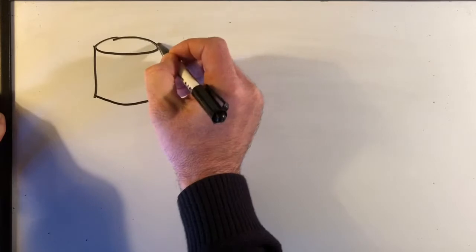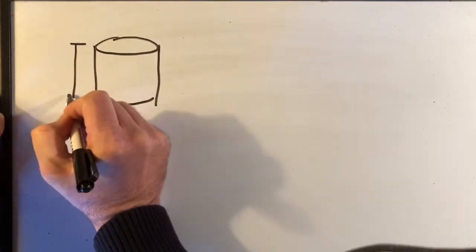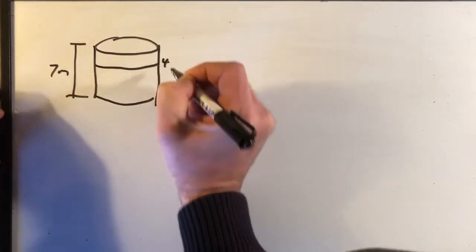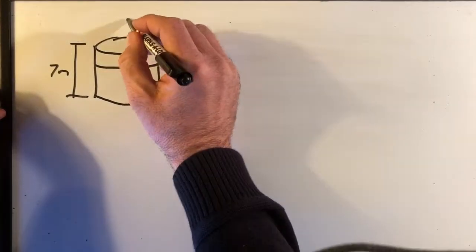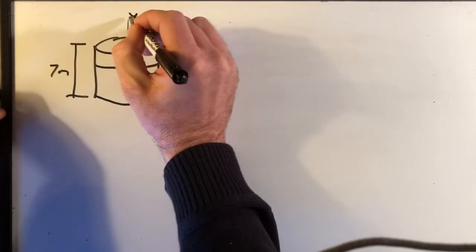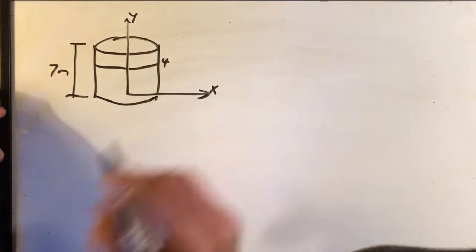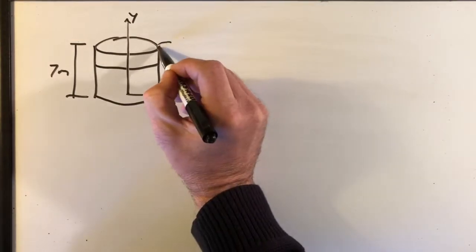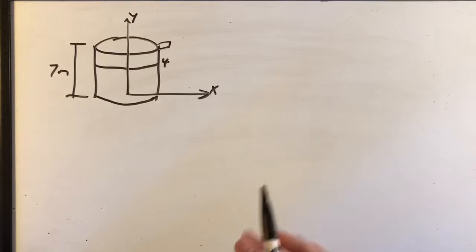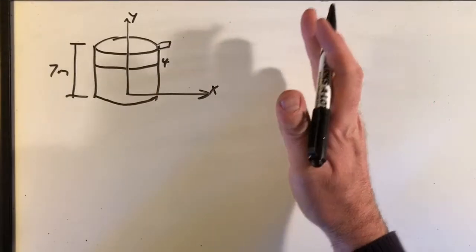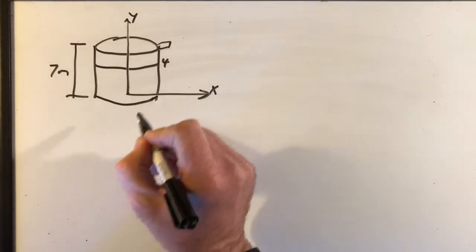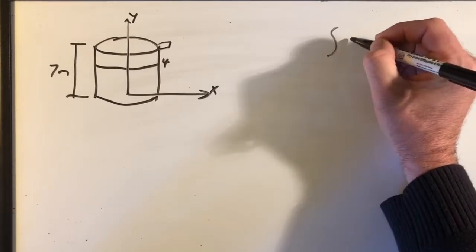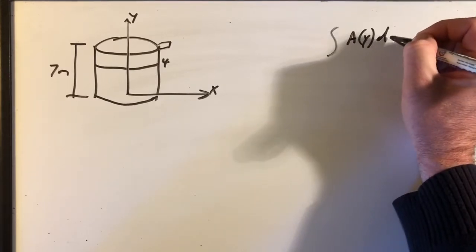We have a cylindrical tank that is 7 meters tall, and the liquid starts at 4 meters. We have the y-axis here and the x-axis here. The spout is right at the top. Normally I'd move everything into the reference frame I prefer — tilting it on its side so that the area is a function of x. But in this case, they gave answer choices where it was area as a function of y, dy.